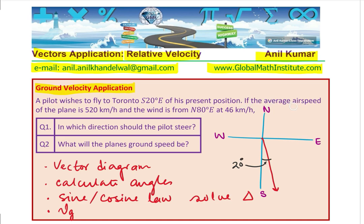The average air speed of the plane is 520 kilometers per hour and the wind is from north 80 degrees east. How do you sketch wind north 80 degrees east with magnitude 46? From north 80 degrees — this means 10 degrees less than 90. That is the wind. What you have in the diagram is the final velocity, which we refer to as ground velocity.